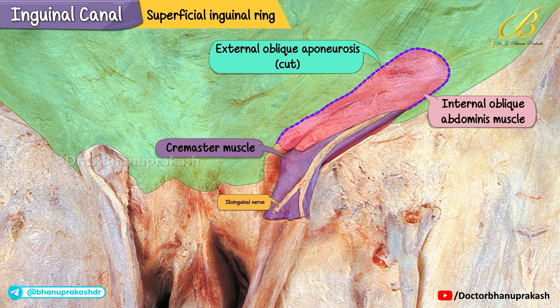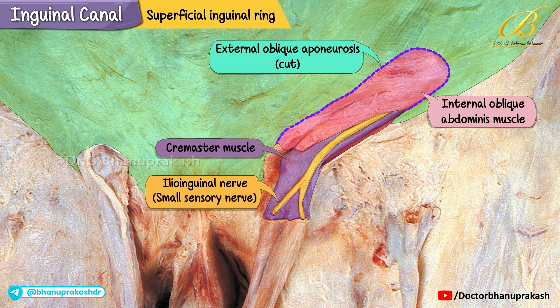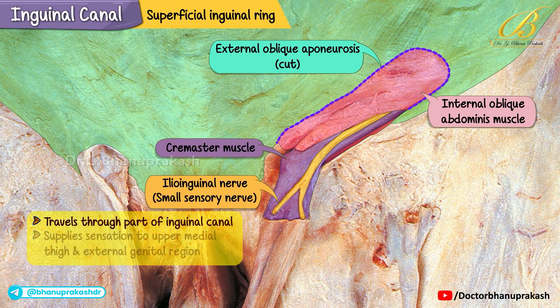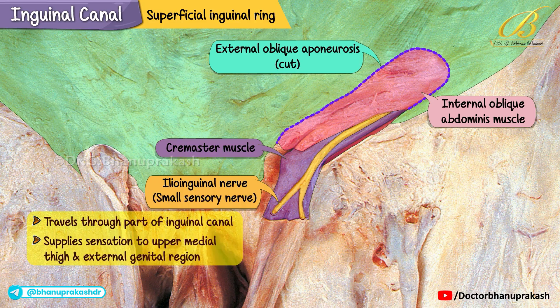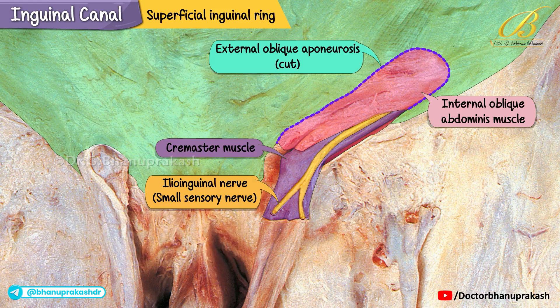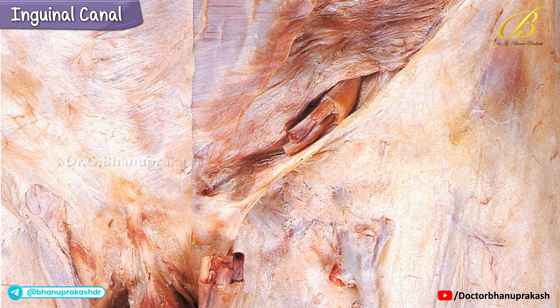This thin cremaster muscle layer plays a role in elevating the testis and regulating its temperature. Running alongside you can also see the ilioinguinal nerve, a small sensory nerve that travels through part of the inguinal canal and supplies sensation to the upper medial thigh and external genital region. On both the right and left sides, the cremaster muscle and ilioinguinal nerve are clearly shown deep to the internal oblique.